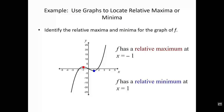Looking at the graph, let's use it to identify the relative maximum and relative minimum for the graph of a particular function f. We recall the definition of relative max or local maximum. If we consider an open interval about the point x = -1, the largest value of the function in that interval occurs at x = -1, so we call x = -1 a relative maximum.